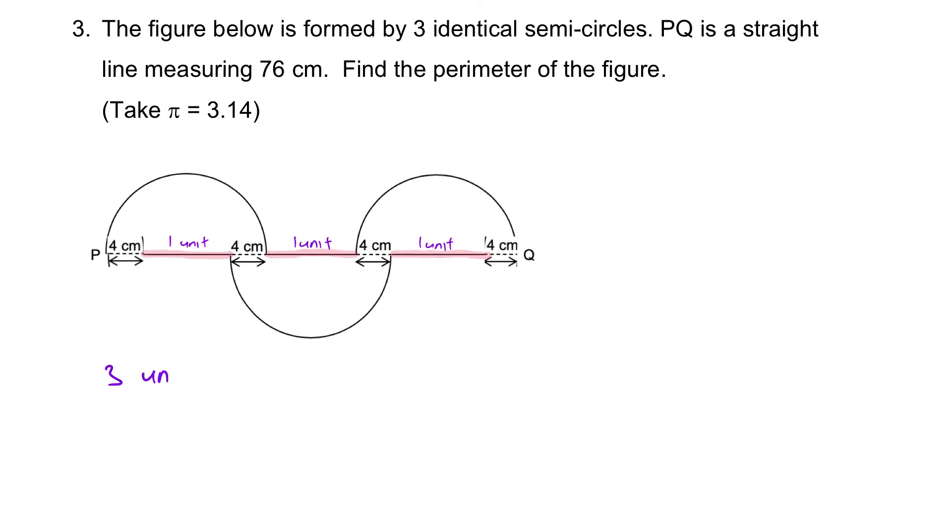So, three units will be equal to 76 cm minus how many? 4, 8, 12, 16. Minus 16 cm. And that will give us 60 cm. Next step. What is one unit? One unit will be 60 divided by 3, which is 20. So, right now we can replace all this with 20, 20, 20. So, it's easier to see.